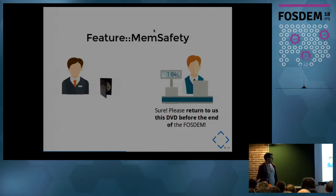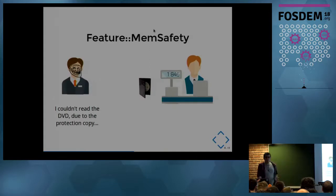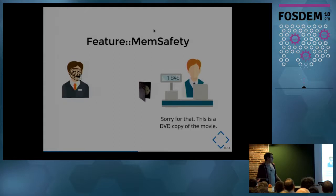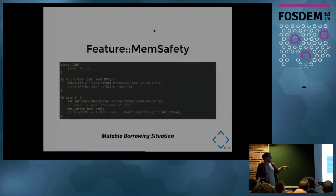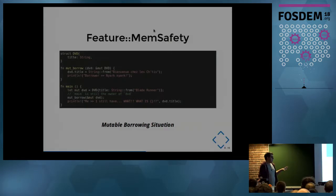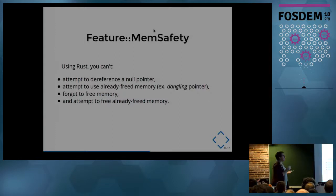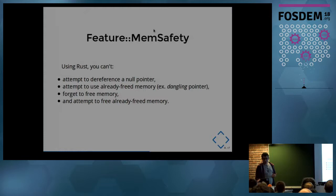With this ownership situation, Rust avoids dangling pointers. Here it is immutable — you can have multiple references. But sometimes you have a situation where you give a DVD copy, and unfortunately it's a writable disk, so you can do anything with it — for example, putting different content on the Blade Runner DVD. This is a mutable borrowing situation. To summarize: using Rust, you cannot dereference a null pointer, use already-freed memory like dangling pointers, forget to free memory, or attempt to free already-freed memory. This is the core feature of Rust: memory safety.